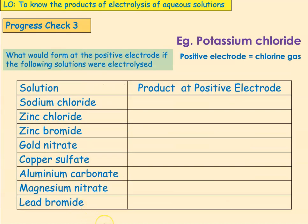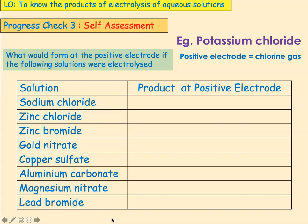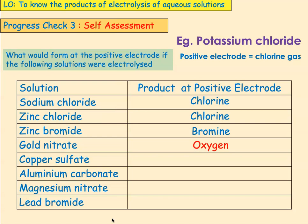Now let's do the same for the positive electrode with full ionic compound names — what would be formed at the anode for these ionic substances. Self-assessment: sodium chloride → chlorine. Zinc chloride → chlorine. Zinc bromide → bromine. Gold nitrate → oxygen. Copper sulfate → oxygen. Aluminium carbonate → oxygen. Magnesium nitrate → oxygen. Lead bromide → bromine.